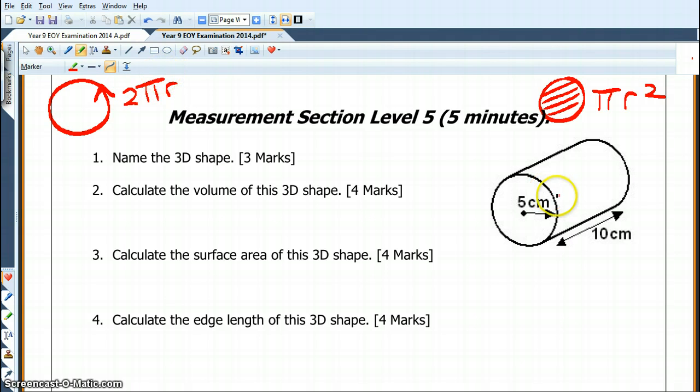The circumference of a circle is 2 pi r. And you need to know that if you've got a cylinder, so that's what this is called, that you get the area of the circle times by the length of it will give you the volume.